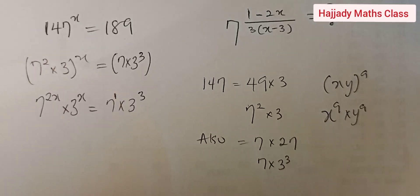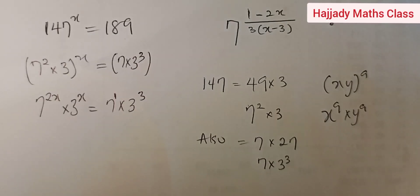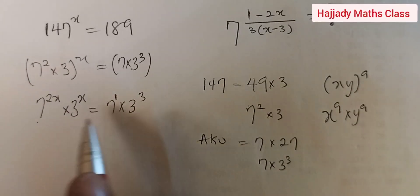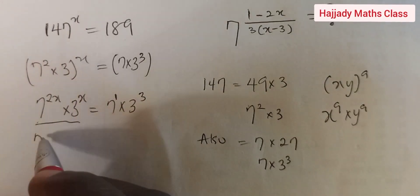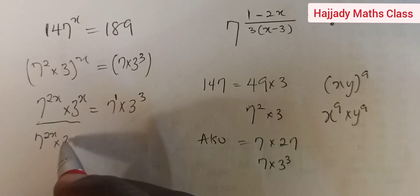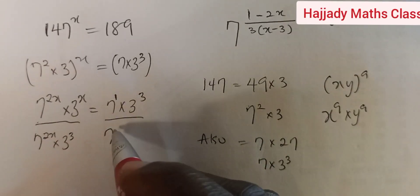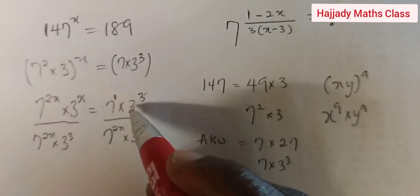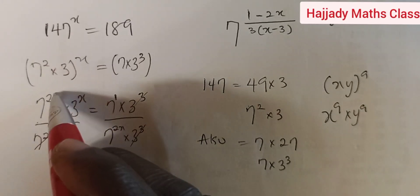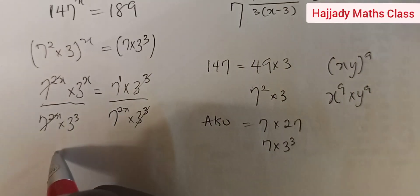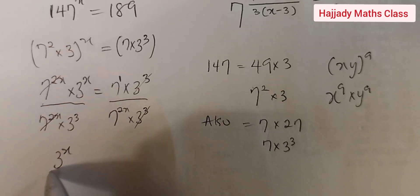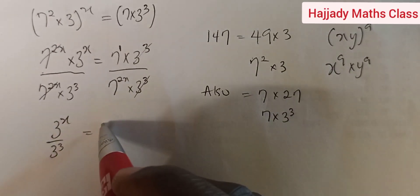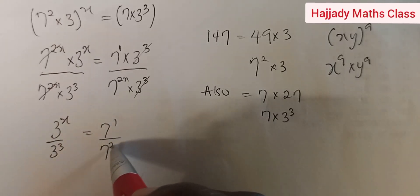Now 7 is the same as 7 raised to power 1. We intend to make the 7s on one side and the 3s on the other side. We do that by dividing both sides by 7 raised to power 2x multiplied by 3 raised to power 3. This gives us, on the left-hand side, 3 raised to power x divided by 3 raised to power 3, equal to 7 raised to power 1 divided by 7 raised to power 2x.